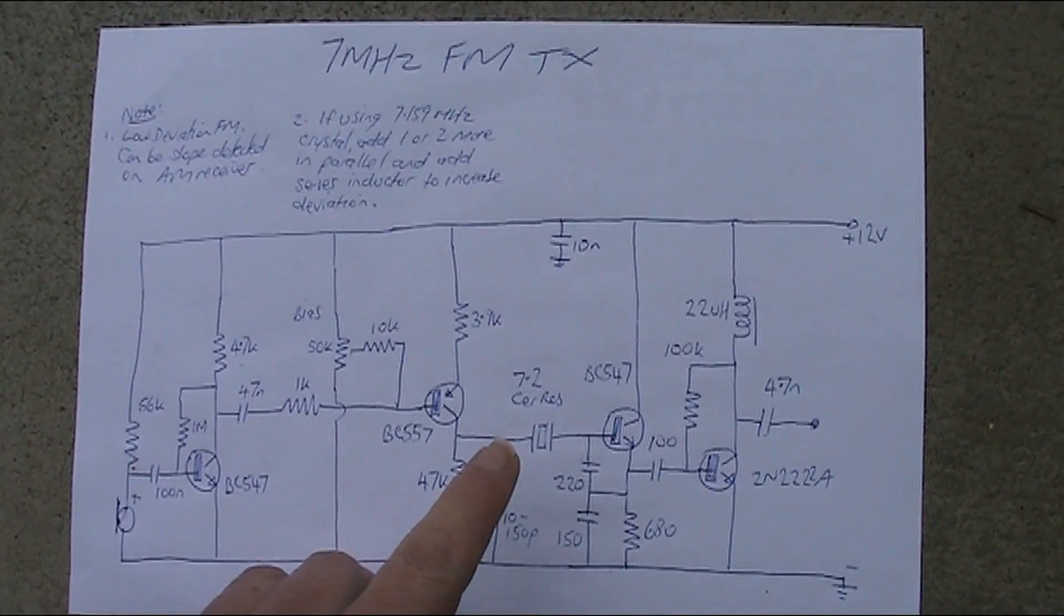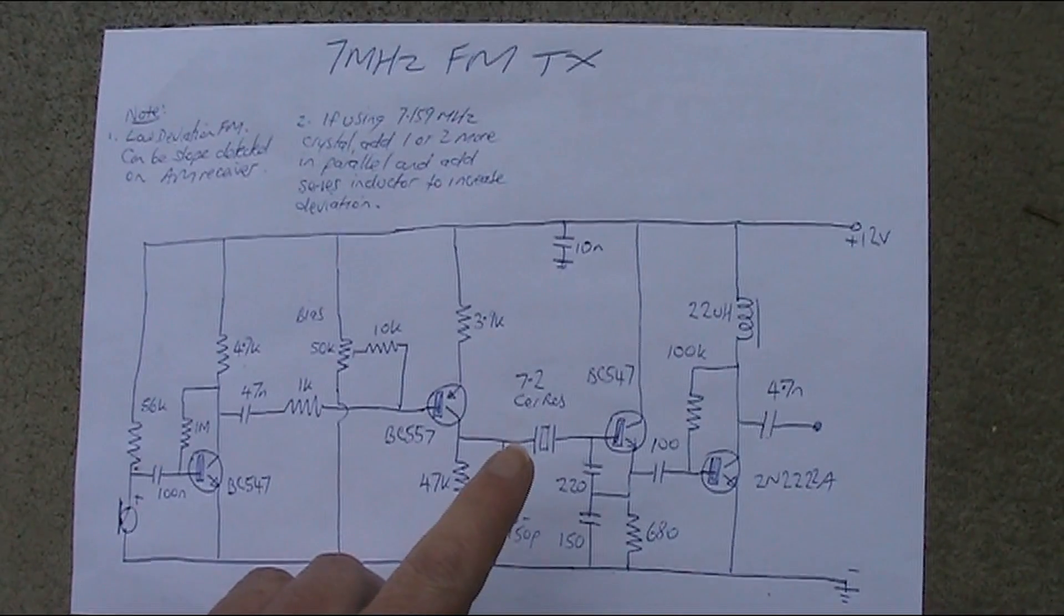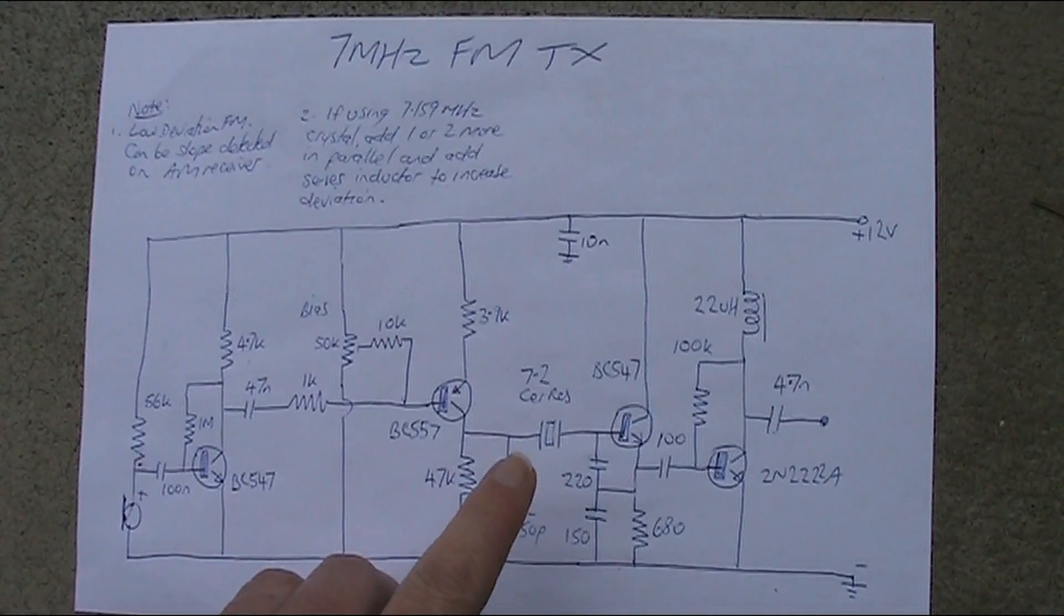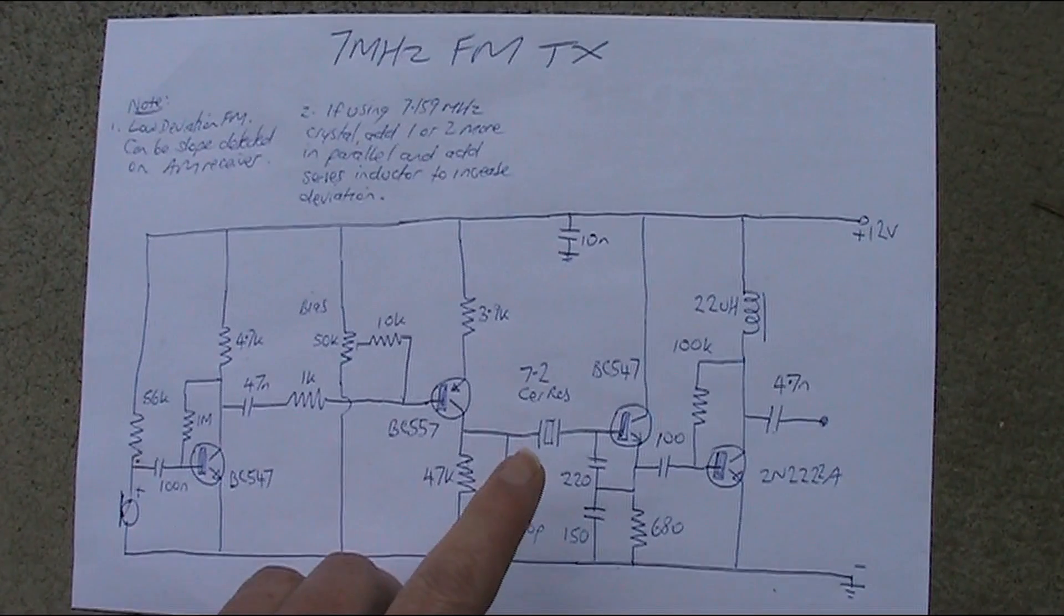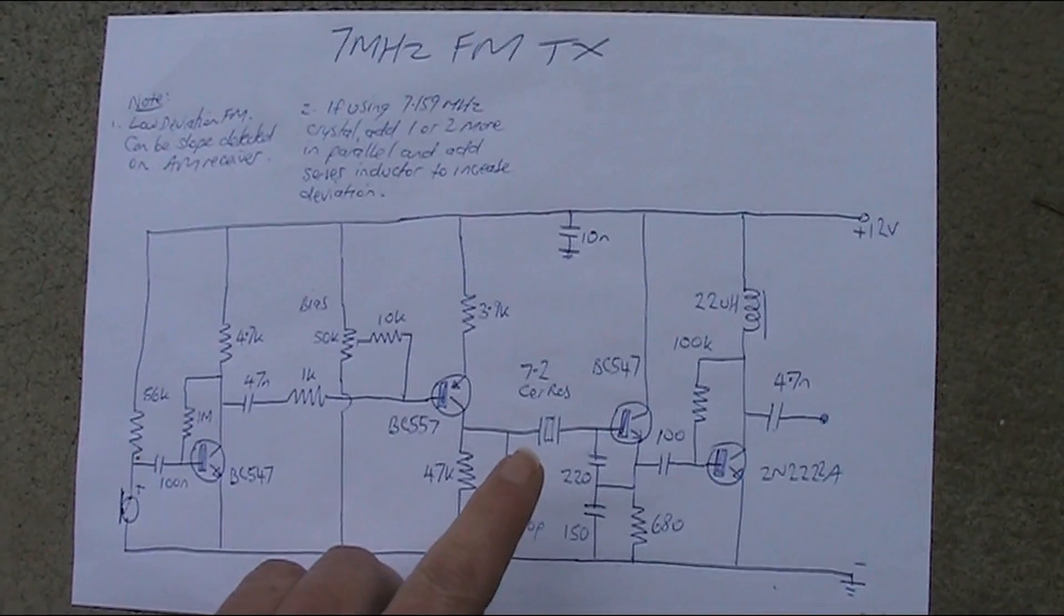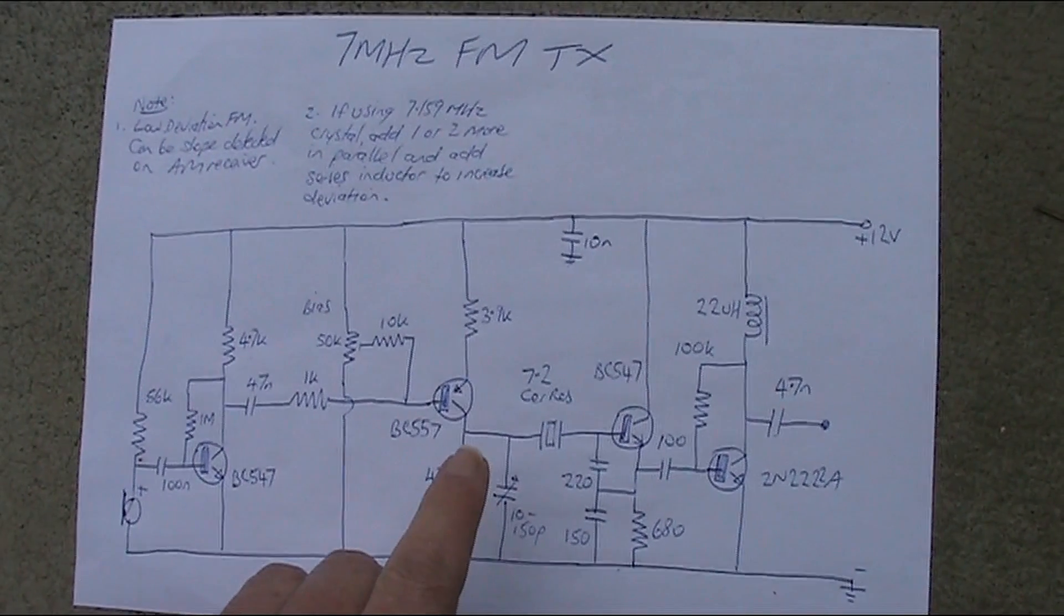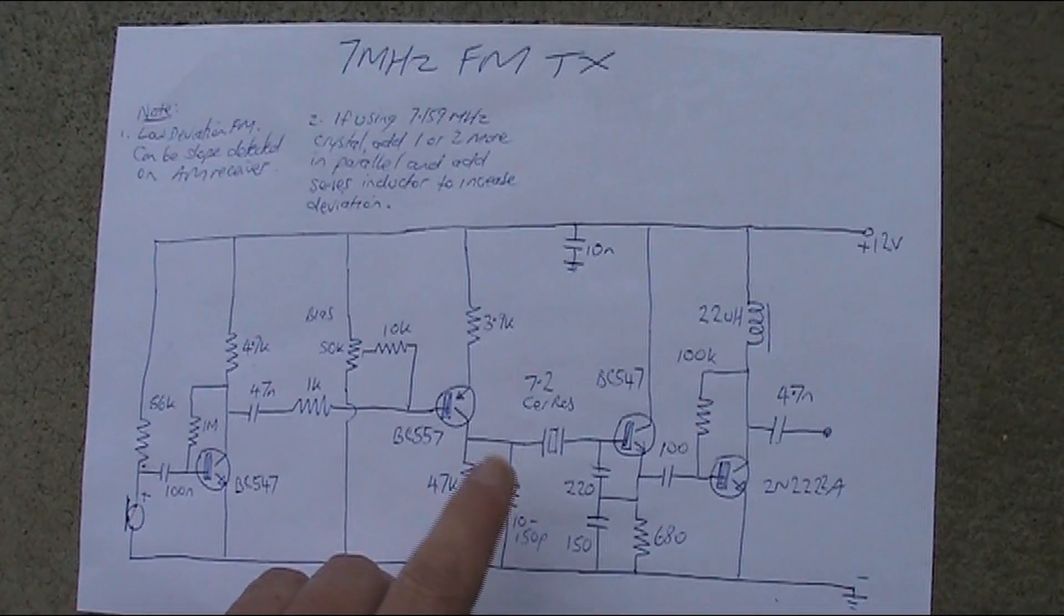If you don't have a ceramic resonator, then you can use quartz crystals. 7.159 is a fairly common frequency. It's double 3.58. If you put two or more crystals in parallel, and then preferably have a series inductor, maybe 10 µH, maybe 22 µH, just experiment with values.